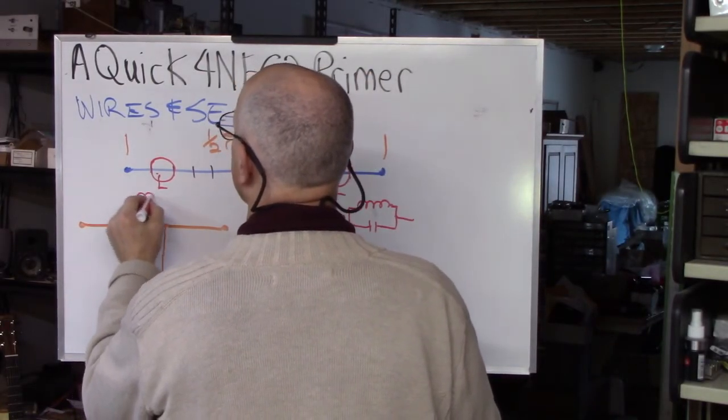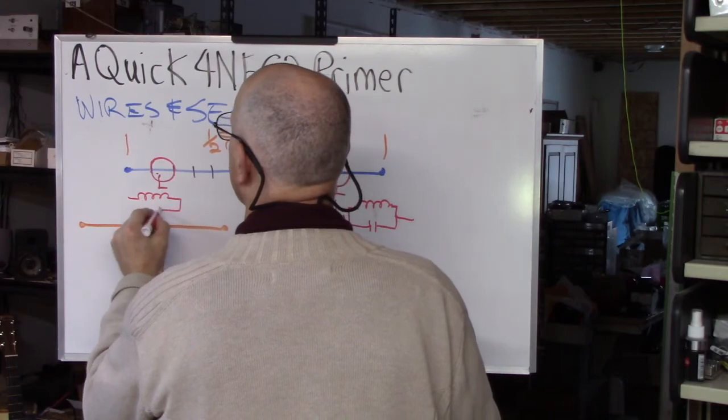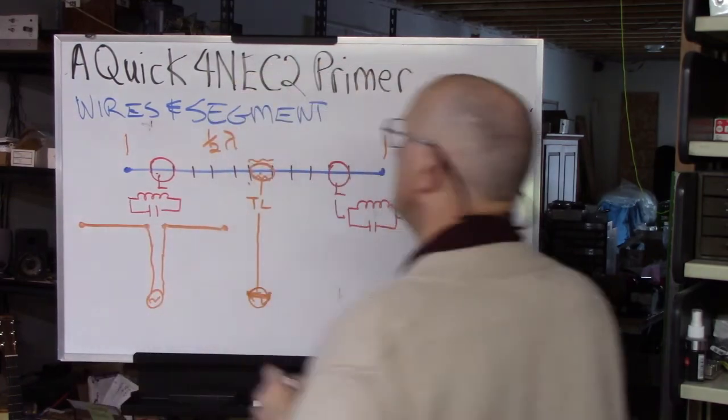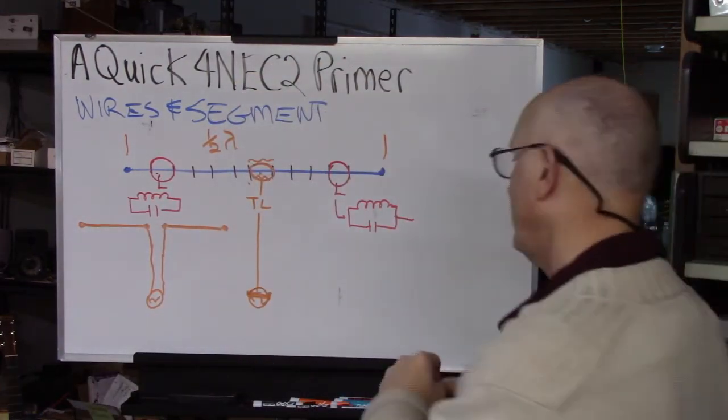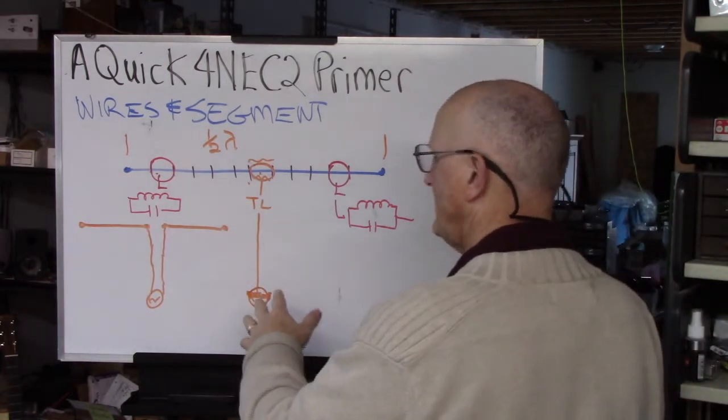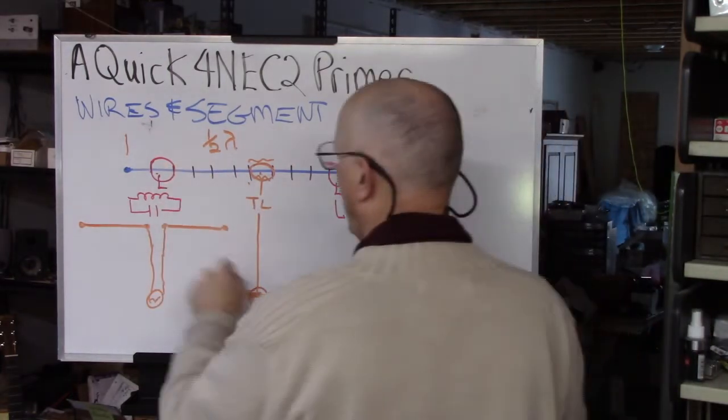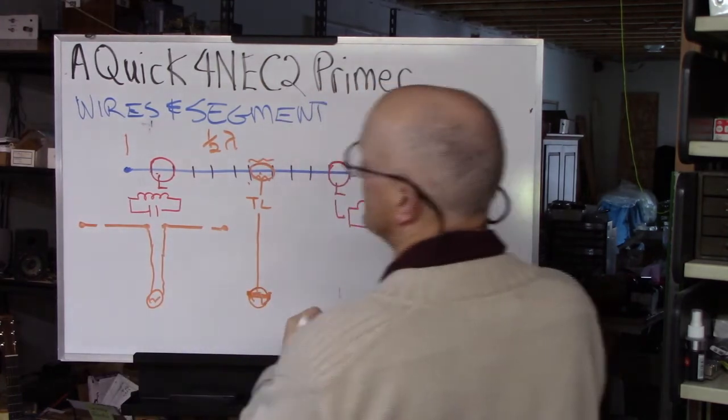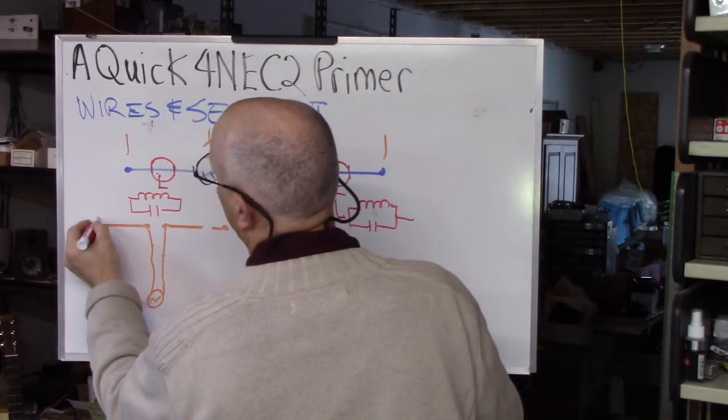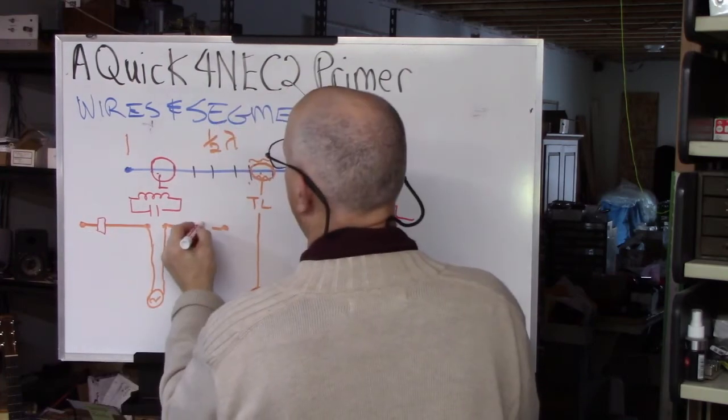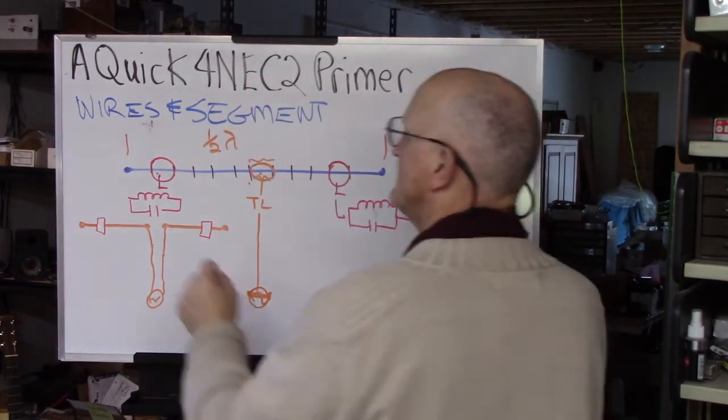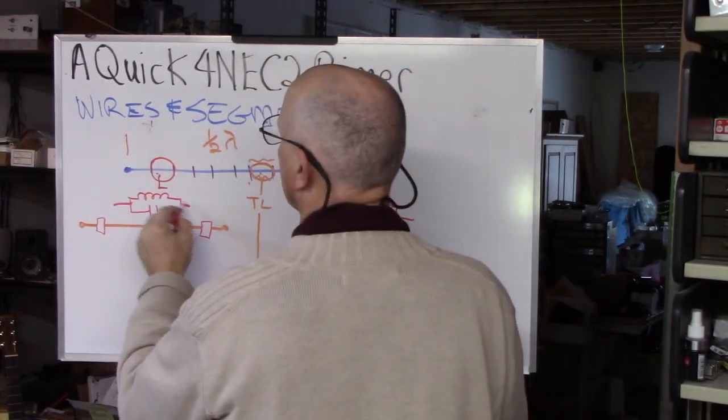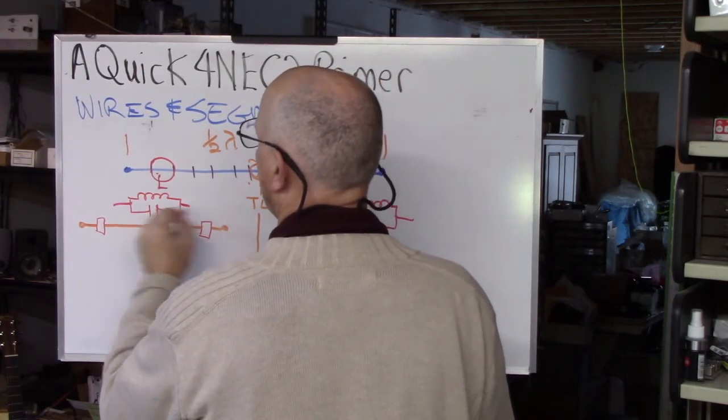So now that's inserted there. So what does it look like to 4NEC2? Well, it interprets that as I now have a trap here, which is a parallel tuned circuit of this inductor and this capacitor.